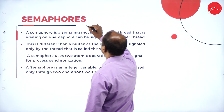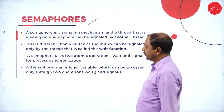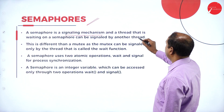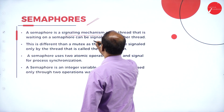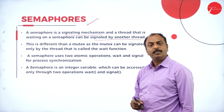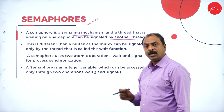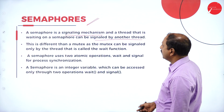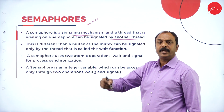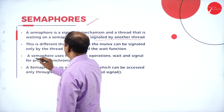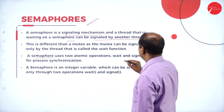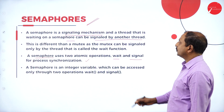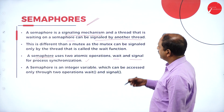The next concept is semaphores. What are semaphores? A semaphore is a signaling mechanism. A thread that is waiting on a semaphore can be signaled by another thread. This relates to the threading or multi-threading concept, where each task or program generates its own thread. A semaphore uses two atomic operations — wait and signal — for process synchronization.